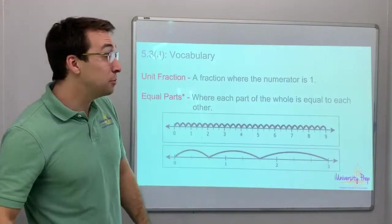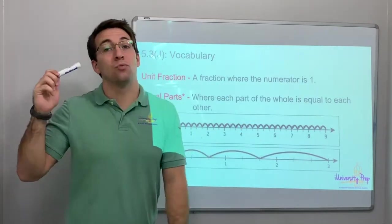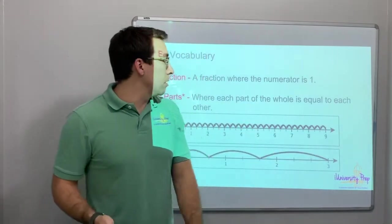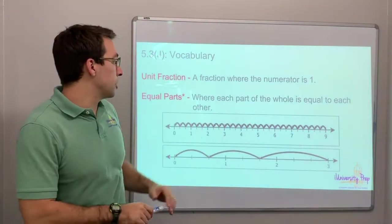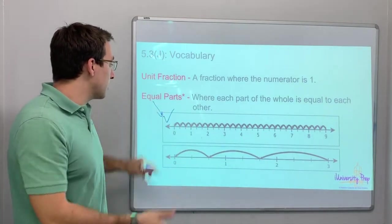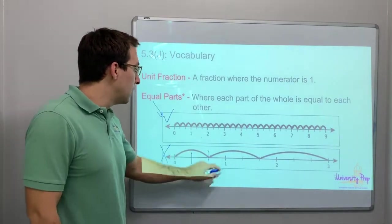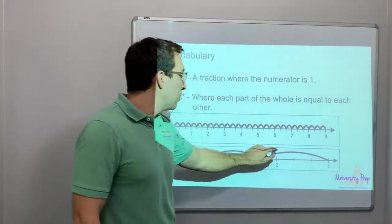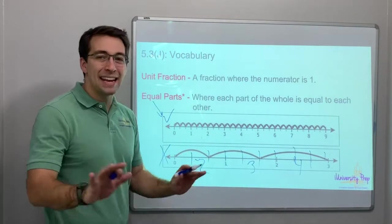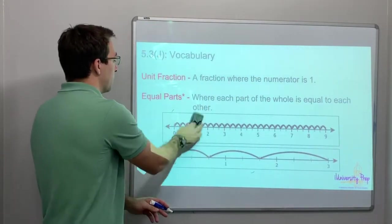So we know our vocab — you better know your vocab. Unit fraction: a fraction where the numerator is 1. Equal parts: where each part of the whole is equal to each other. This is good — this is an equal part. This is bad. Look, 1, 2 — 1, 2, 3 — 1, 2, 3, 4. That's not equal. That's bad. We're not into that. That's like a series or a pattern. We want equal parts.